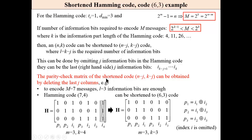The parity check matrix of the shortened code can be obtained by deleting the last j columns. For example, if we have 7 messages, which means that we need 3 information bits only, not 4. The nearest Hamming code is (7,4).